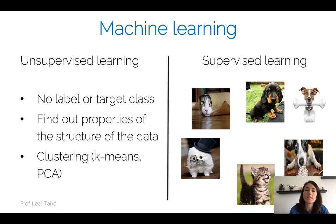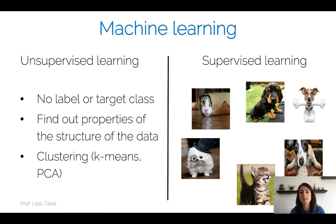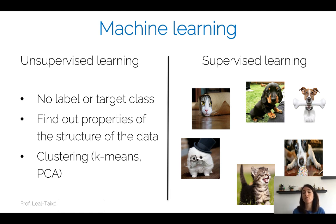For unsupervised learning, the task changes slightly. We don't have access to the labels or target classes — we just have access to the input images. We cannot tackle image classification because we have just the images, but not the labels. All that we can do in unsupervised learning is find properties of the structure of the data, for example, perform clustering. You might have had courses where you discussed clustering methods such as k-means or principal component analysis — these are all ways to find structure in the data.